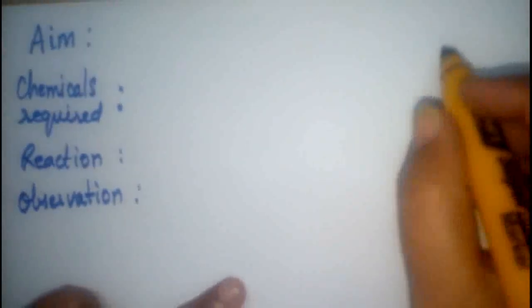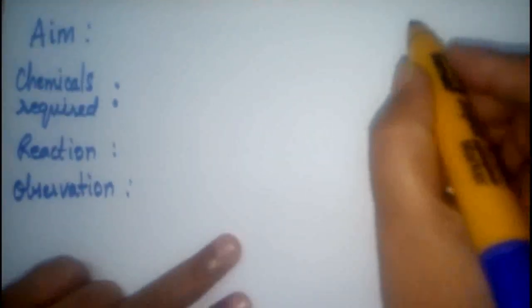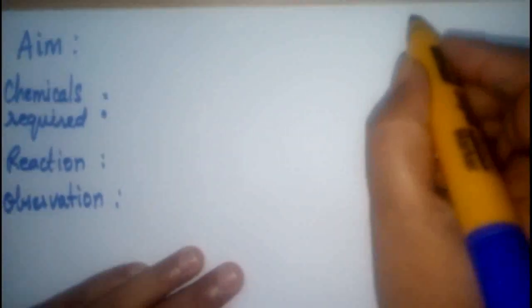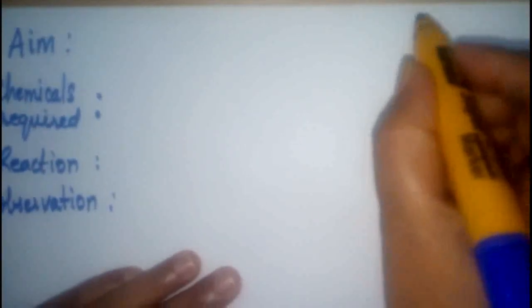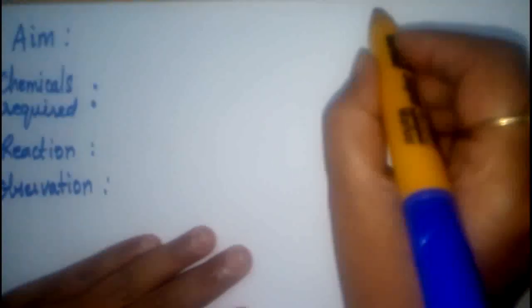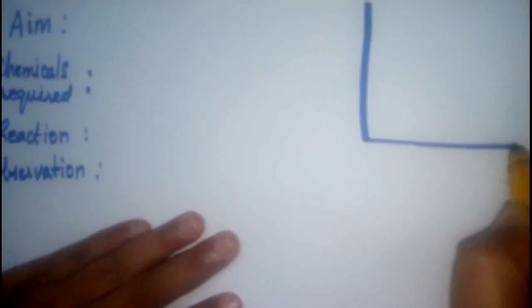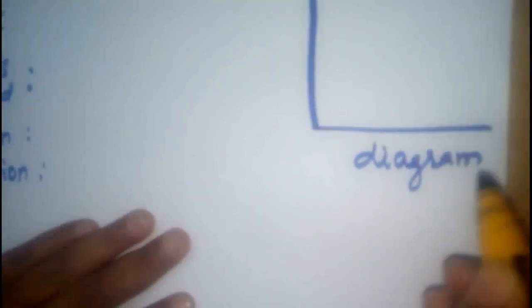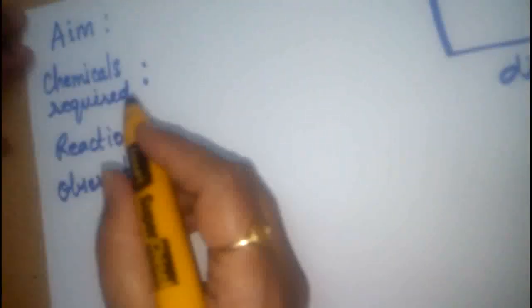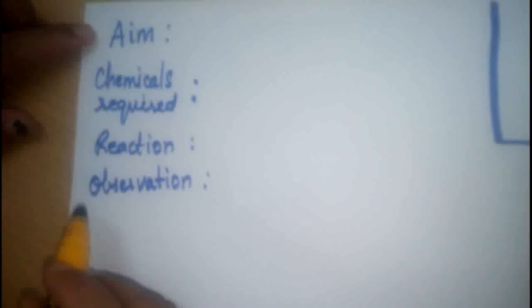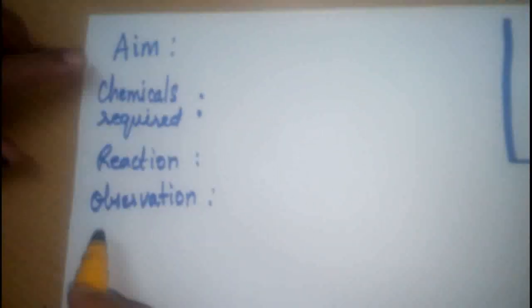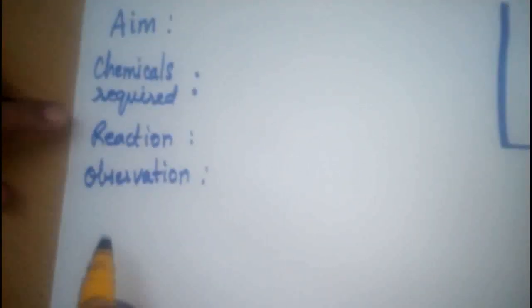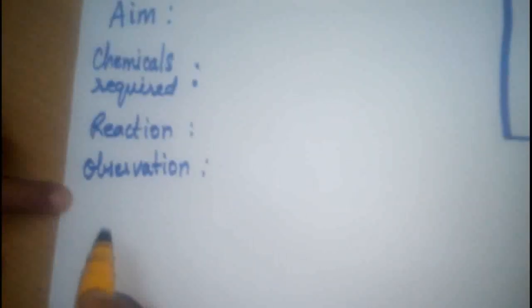The homework for today's class, you design it in something like this in your classwork. To the right corner, you draw the diagram. And to the left, you write these steps. Aim, chemicals required, reaction, observation.